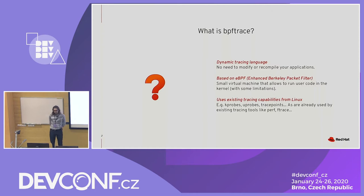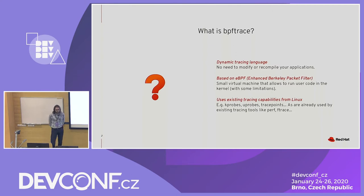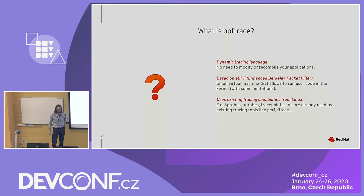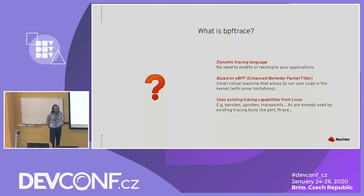Let's see what's a bit under the hood. BPF trace is based on eBPF, the Enhanced Berkeley Packet Filters. It's been a pretty hot topic in the kernel area lately. While we don't need to get into the detail of what it is now, just know that it's a small virtual machine that can run some user code in the kernel. And because of safety and security concerns, there are some limitations, such as size limitations.